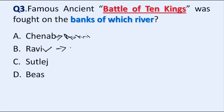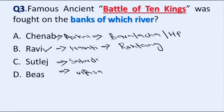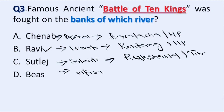Sanskrit name of River Ravi is Airavati, Sutlej is Shatadru, and Beas is Vipasa. Source of Chenab lies on Baralacha Pass in Himachal Pradesh. Source of Ravi lies on Rohtang Pass in Himachal Pradesh. Source of Sutlej is in Tibet. Source of Beas lies on Beas Kund in Himachal Pradesh.